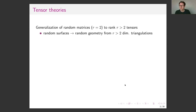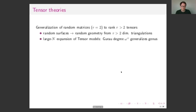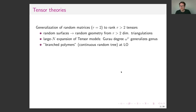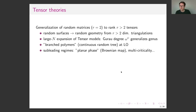Tensor field theories generalize random matrices to higher ranks — to tensors — and this comes with a generalization of theories of random surfaces to theories of random geometry built from higher dimensional triangulations. In tensor models there was a big breakthrough: one can have a large-N expansion in the size of the tensors, generalizing the genus expansion of surfaces to an expansion labeled by a degree. At leading order one finds random polymers, likely the continuous random tree, and in subleading regimes something like the Brownian map and multi-critical structure.